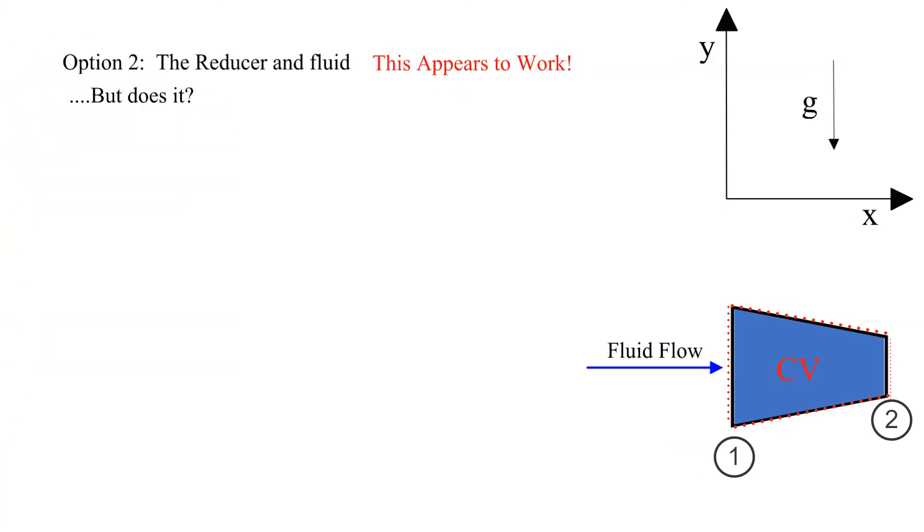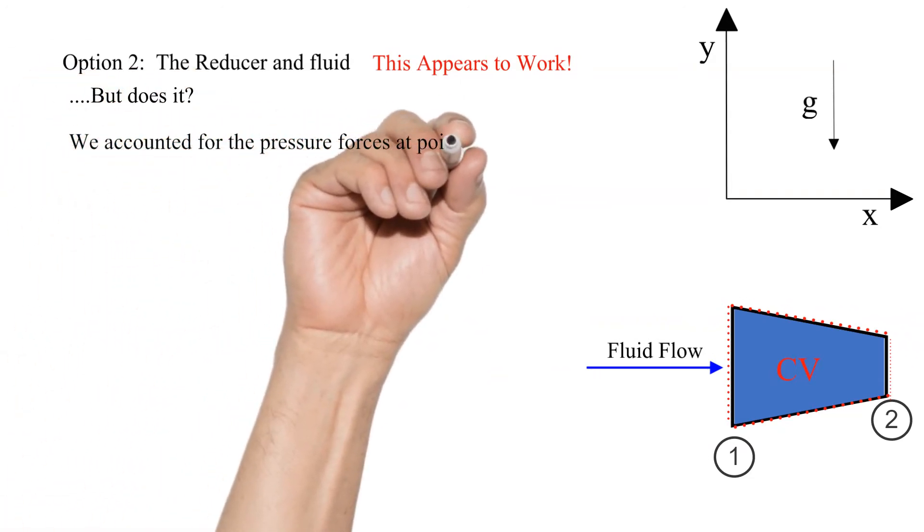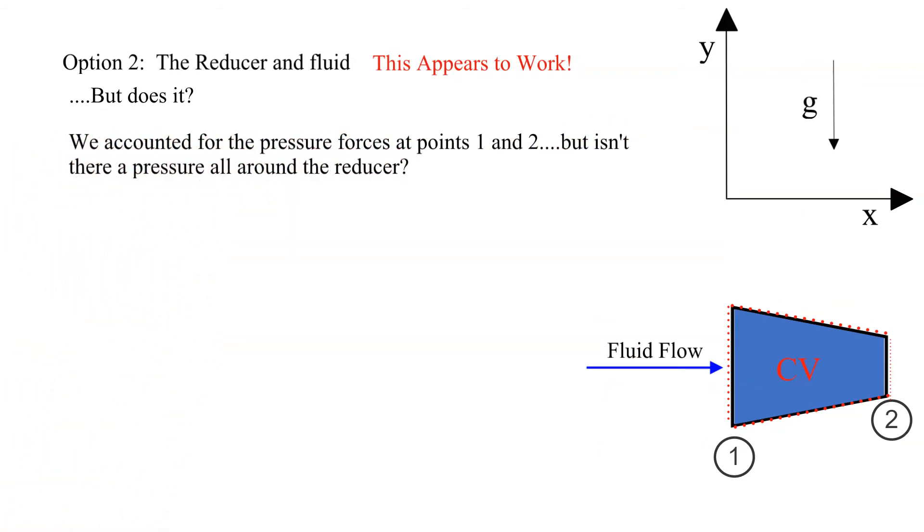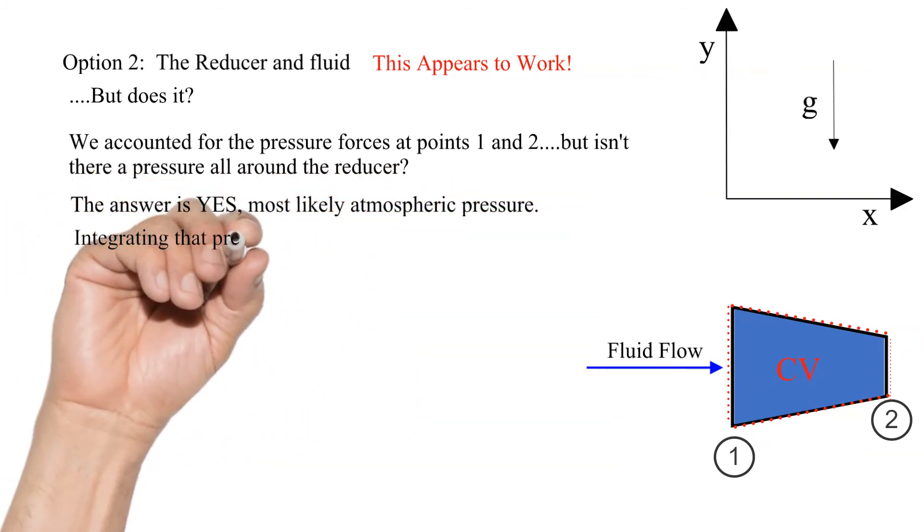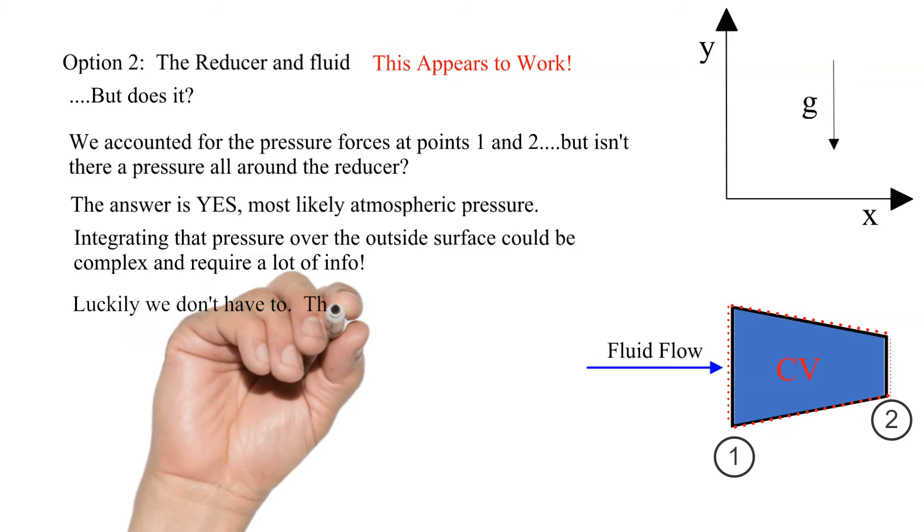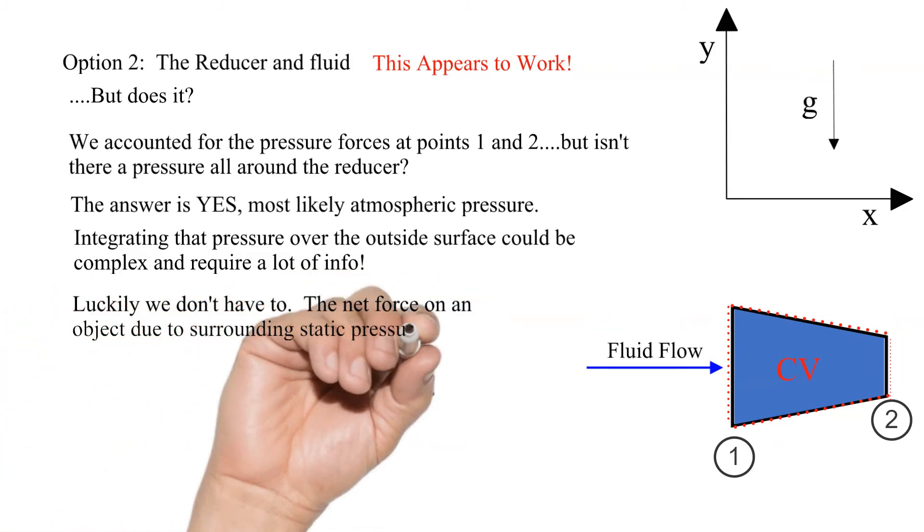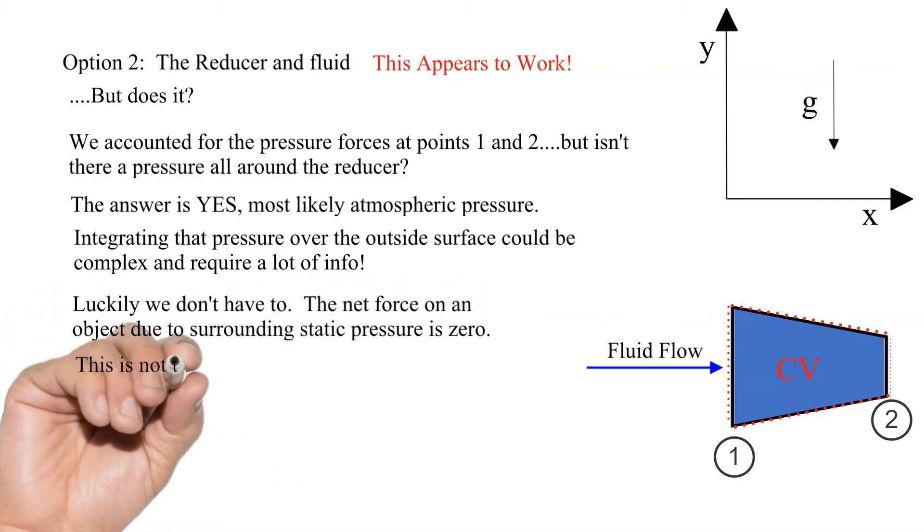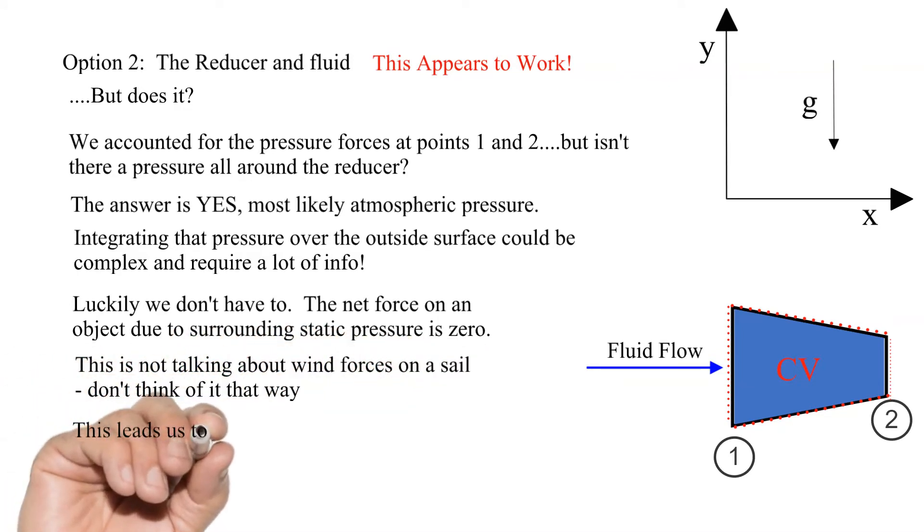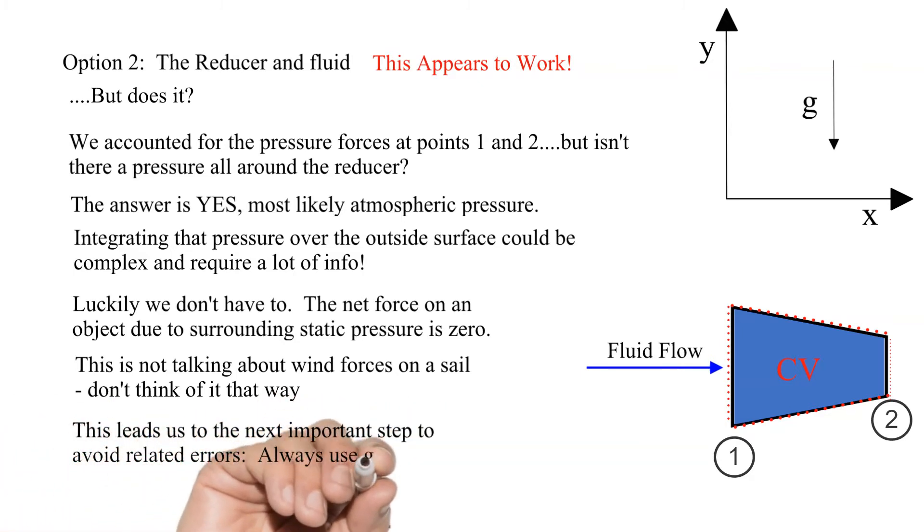We accounted for the pressure forces at points 1 and 2, but isn't there a pressure all around the reducer? The answer is yes, most likely atmospheric pressure. Integrating that pressure over the outside surface could be complex and require a lot of info. Luckily we don't have to. The net force on an object due to surrounding static pressure is zero. This is not talking about wind forces on a sail, don't think of it that way. This leads us to the next important step to avoid related errors: always use gauge pressure so the surrounding pressure is zero.